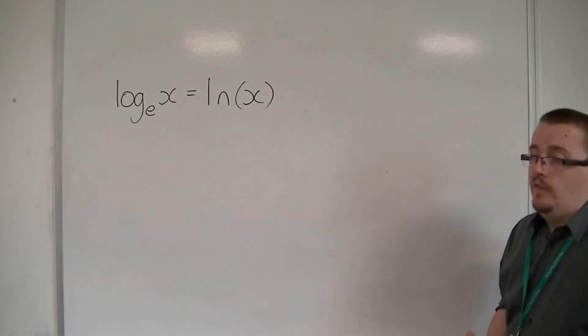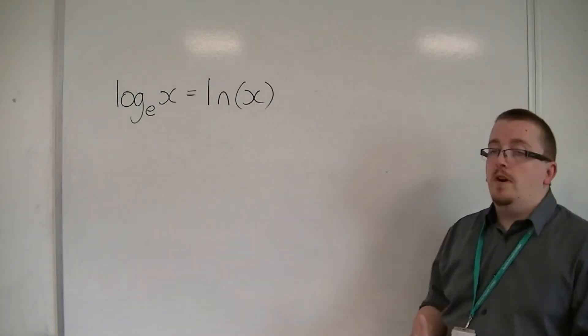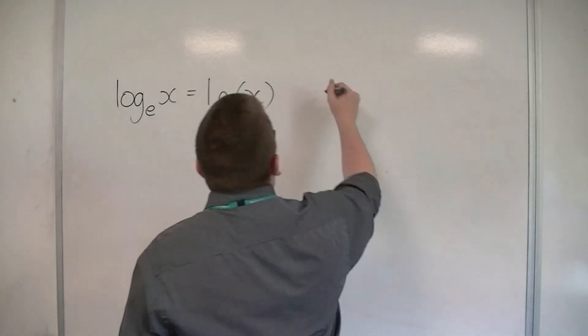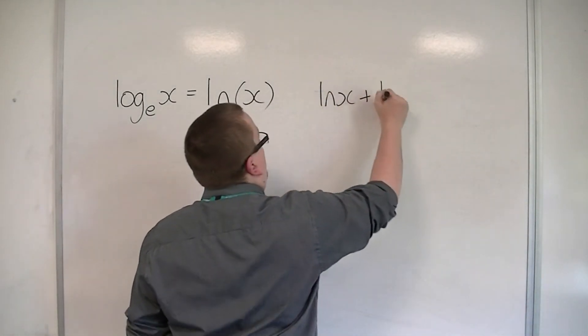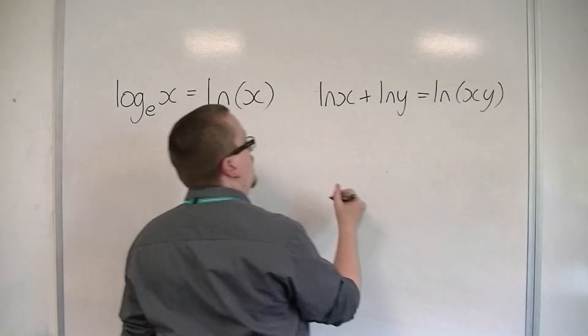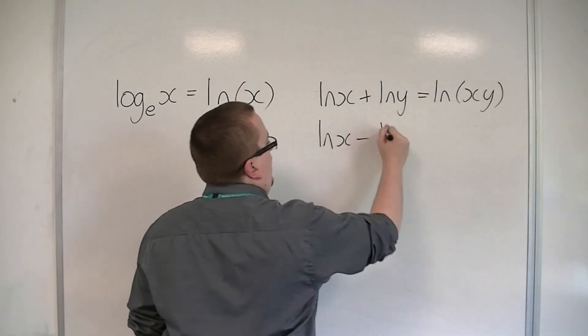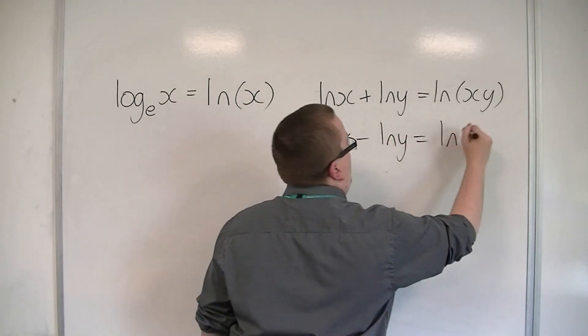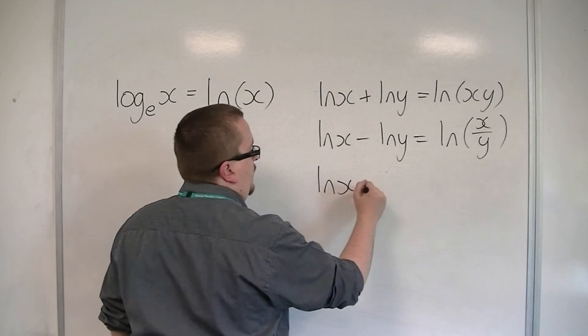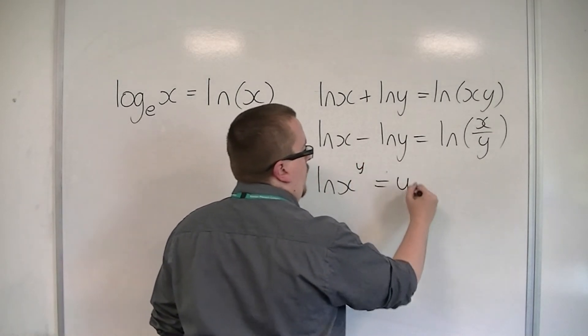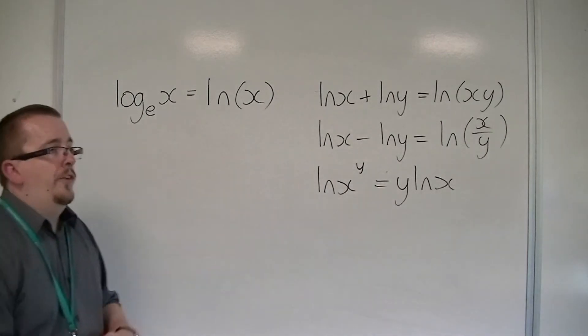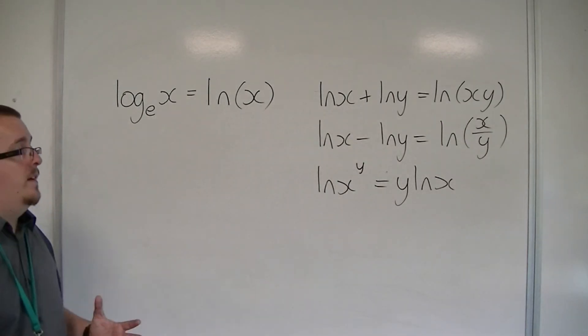When you're in base E, you can also write the log laws in terms of ln. So ln of X plus ln of Y is ln of X times Y. ln of X minus ln of Y is ln of X over Y. And ln of X to the power of Y is Y ln X. So the same three log laws apply here.